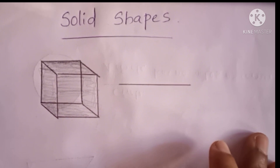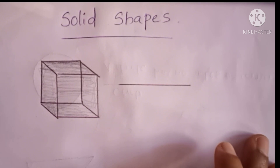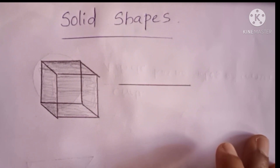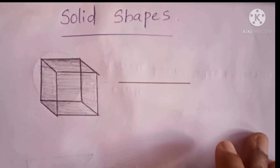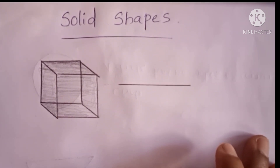Hi children. Our next topic is solid shapes. We have learned about flat shapes. Which are they? Square, Rectangle, Triangle and Circle. We have learned flat shapes already. Now we will learn about solid shapes.